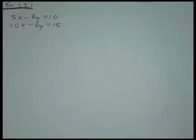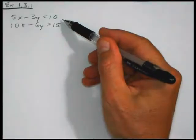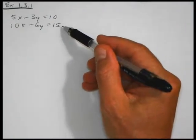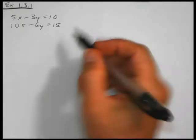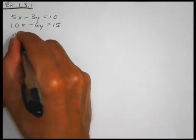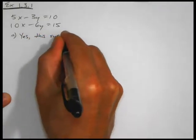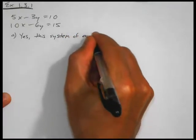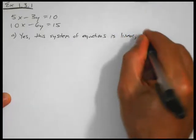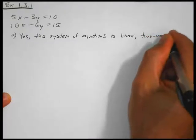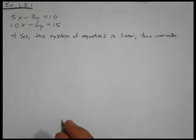Exercise 1. Taking a look at this system — the first equation is already in the form Ax + By = C, it's linear. The second equation is also already in the form Ax + By = C, that's linear as well. Part A: Yes, this system of equations is linear in two variables.